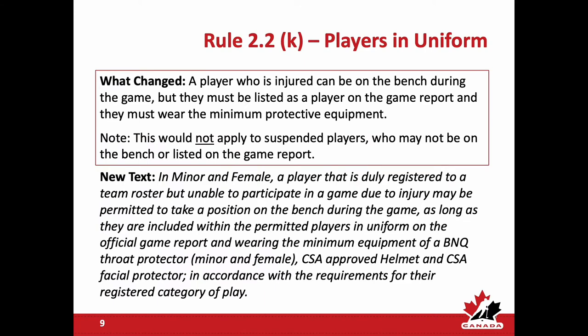Rule 2.2K — players in uniform: a player who is injured can be on the bench during the game, but they must be listed as a player on the game report and must wear minimum protective equipment — a CSA certified helmet, CSA certified facial protector, and BNQ certified throat protector. This does not apply to suspended players. It is most applicable to players on long-term injuries who wish to remain part of the team, and they must be listed as one of the 19 players (17 skaters and 2 goaltenders, or 20 for junior/triple-A).